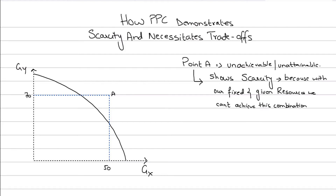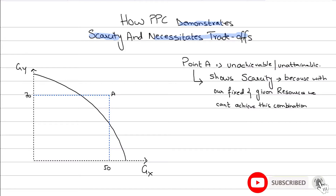Hi and welcome back. In this video we're going to be discussing how the production possibility curve demonstrates scarcity and how that necessitates trade-offs being made by the economy or by the firm. A lot of students think this is an easy topic, but many are not able to write properly when answering exam questions. It's not about what you write, it's about how you write it — so watch this video till the end.